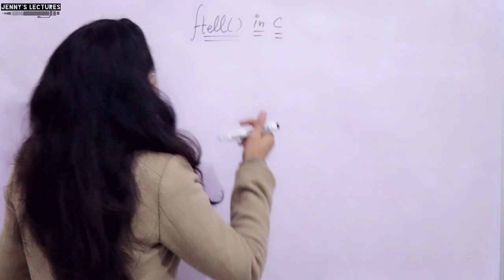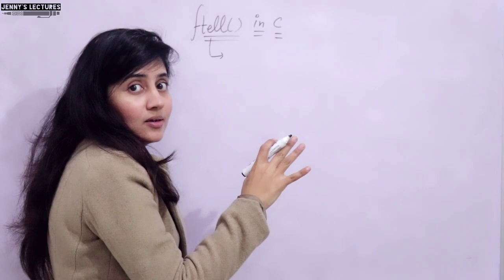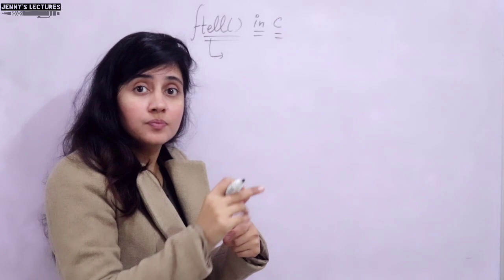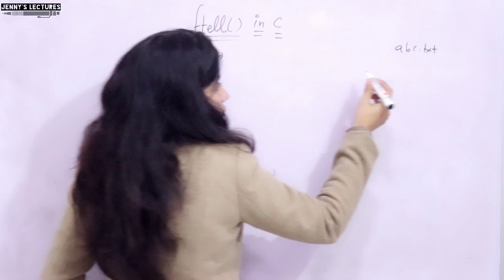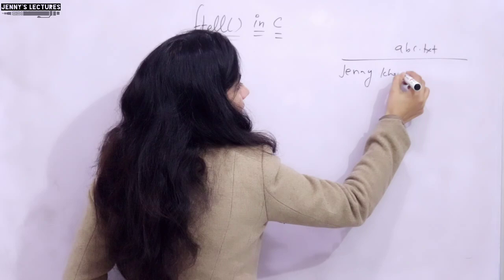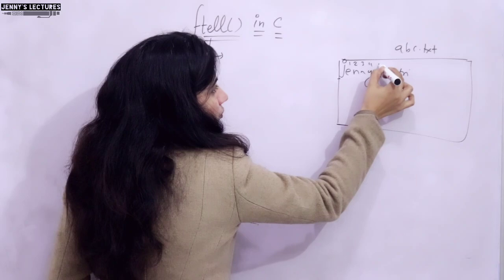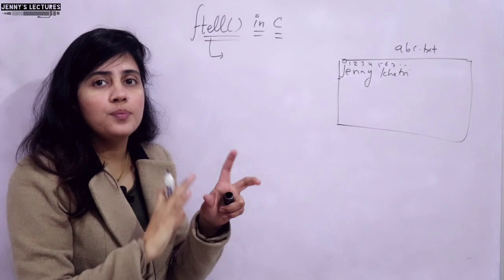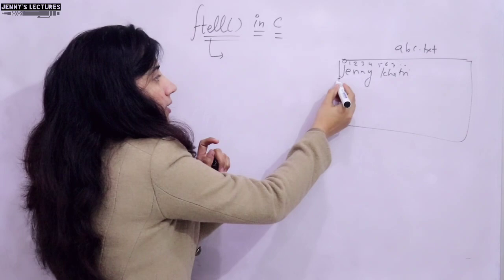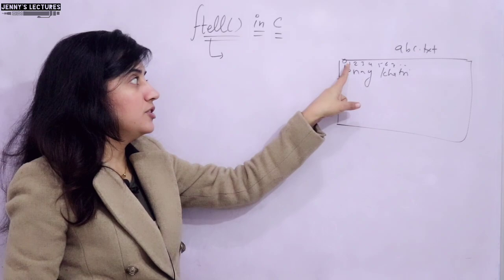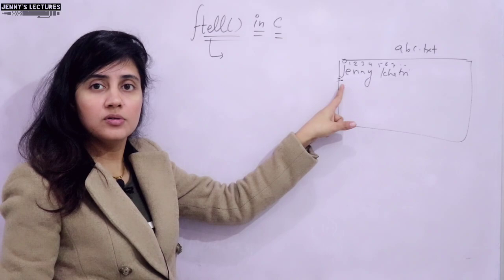As the name suggests, ftell will tell something — specifically, it will tell the position of the file pointer in the file with respect to the starting of the file. Suppose we have a file abc.txt containing 'Jenny Khatri'. The starting of the file is index 0, 1, 2, 3, 4, 5, 6, 7, and so on. If you open the file in read mode, the file pointer starts at the beginning, so its position is 0. Using ftell, you can find out that position.